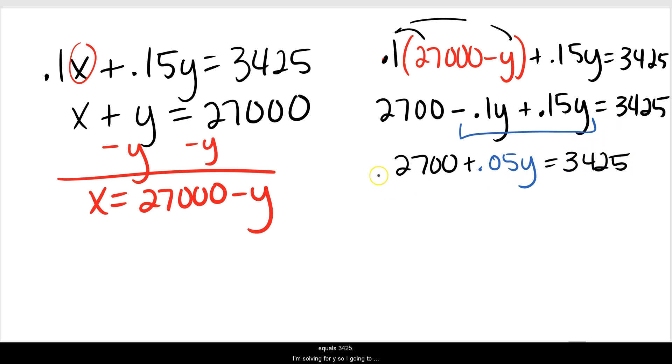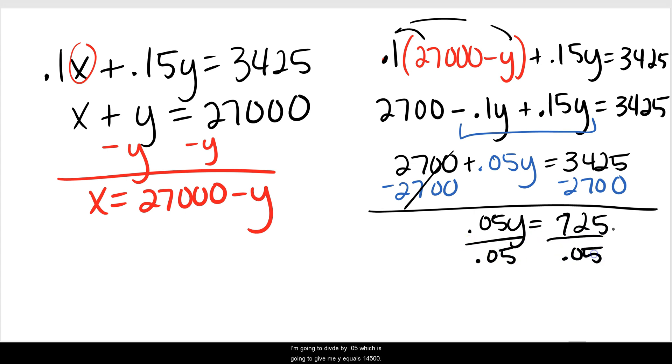I'm solving for Y, so I'm going to subtract 2,700. So I have 0.05Y equals 3,425 minus 2,700 equals 725. And then to solve for Y, I'm going to divide by 0.05, which is going to give me Y equals 14,500.